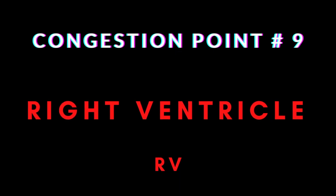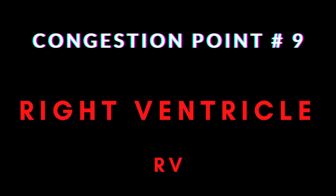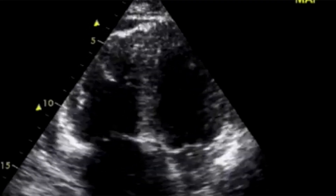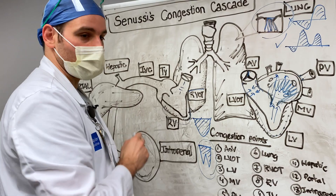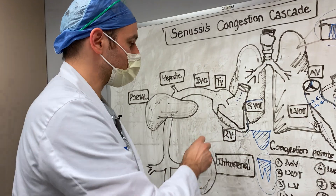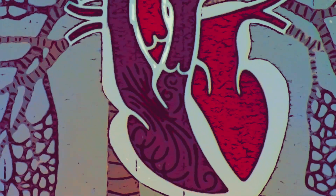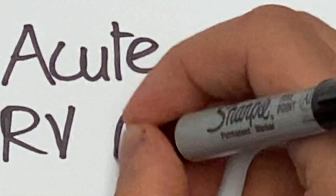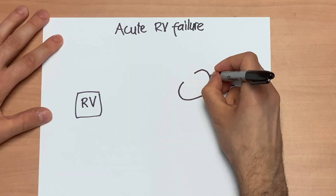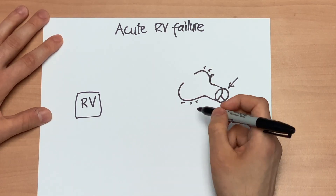Next is the right ventricle, which has gained a lot of well-deserved attention after being neglected for a long time. Assessing RV function includes evaluating TAPSE, looking at the tricuspid valve, and understanding RV structure. In an upcoming episode, we will take a deep dive into assessing the right ventricle in full detail. This is a very important part of the congestion cascade and must be handled carefully.